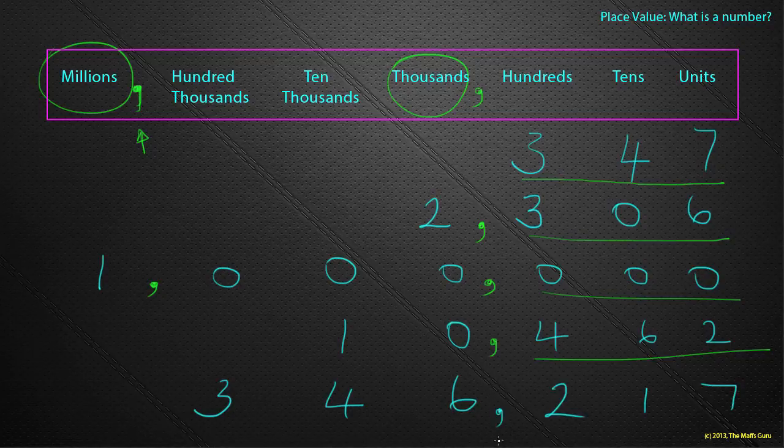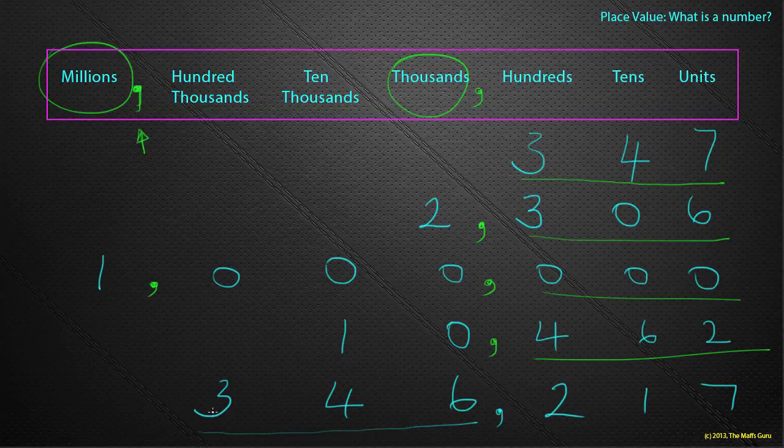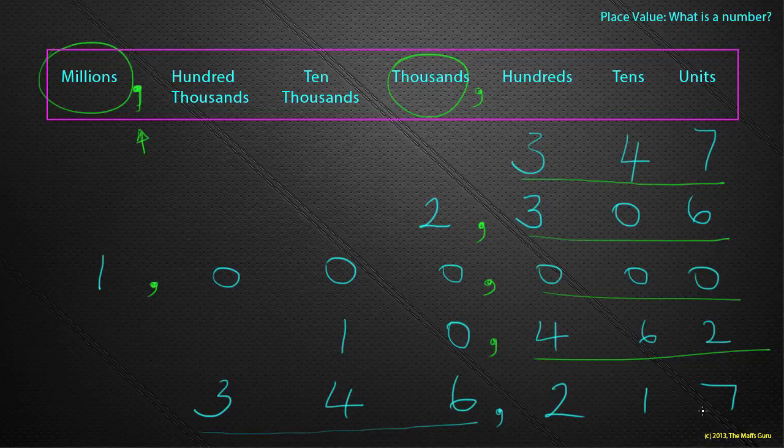And I'll put the comma back in. Well, let's just see. We read the numbers in groups of three. So that's three hundred and forty six thousand two hundred and seventeen.